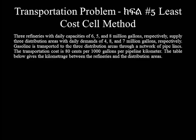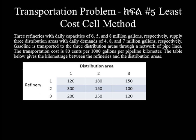Three refineries with a daily capacity of 6, 5, and 8 million gallons respectively supply three distribution areas with a daily demand of 4, 8, and 7 million gallons respectively. Gasoline is transported to the three distribution areas through a network of pipelines. The transportation cost is 80 cents per thousand gallons per pipeline kilometer. The table below gives the kilometrage between the refineries and the distribution areas.